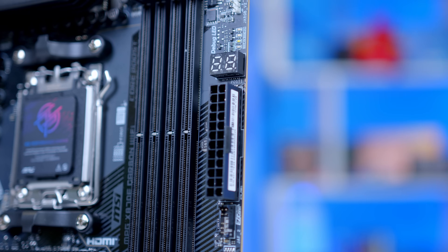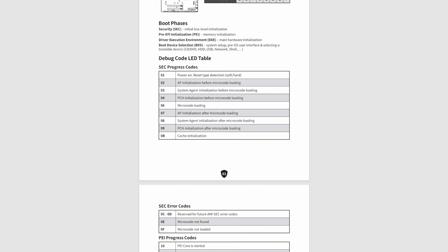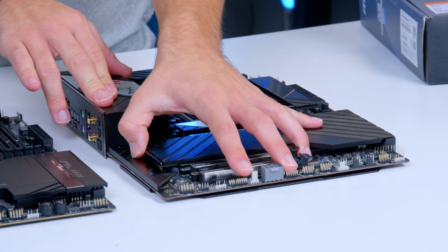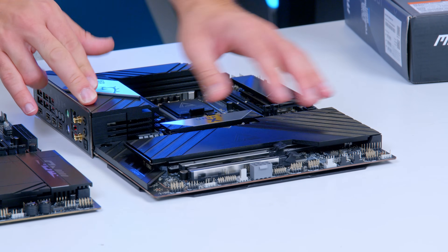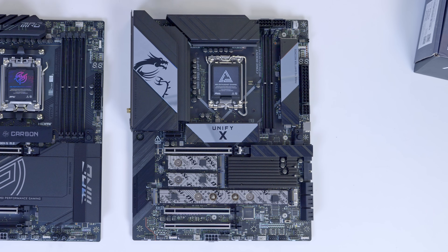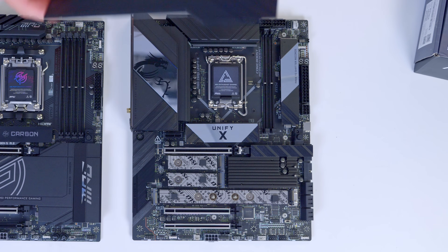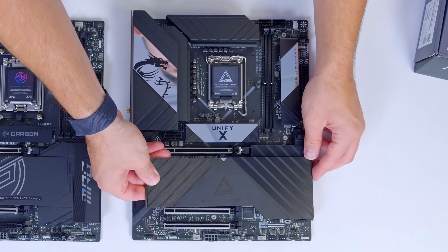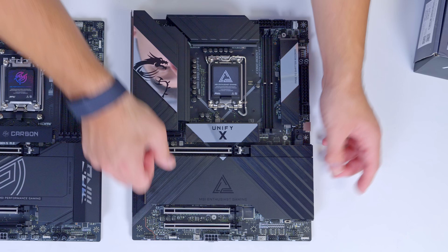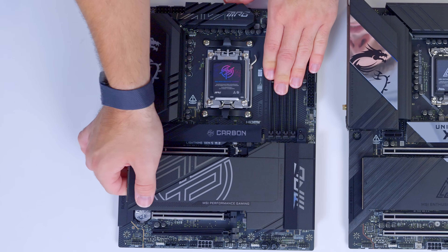Q-code displays allow for easy debugging by reporting error codes, so if you have an issue with system POST, you can see what that issue is. Some of the higher-end boards also have tool-less features. This MSI Unify X is very high-end and has a single heatsink which, when removed, reveals a number of fully tool-less NVMe installation slots. You can see how easy it is to pop back on — it clips into place, nice and simple.